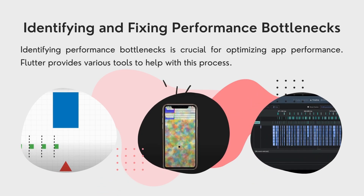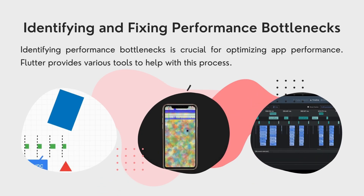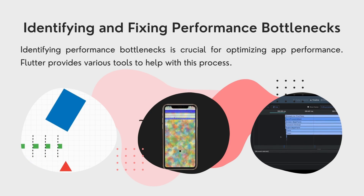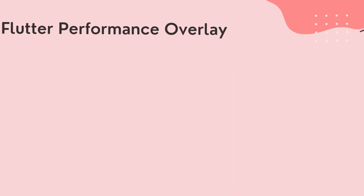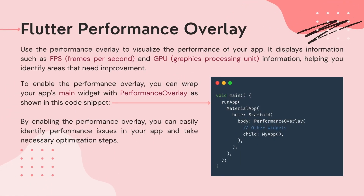Identifying and Fixing Performance Bottlenecks. Identifying performance bottlenecks is crucial for optimizing app performance. Flutter provides various tools to help with this process. Flutter Performance Overlay: use the performance overlay to visualize the performance of your app. It displays information such as FPS (frames per second) and GPU (graphics processing unit) information, helping you identify areas that need improvement. To enable the performance overlay, you can wrap your app's main widget with PerformanceOverlay, as shown in the following code snippet. By enabling the performance overlay, you can easily identify performance issues in your app and take necessary optimization steps.